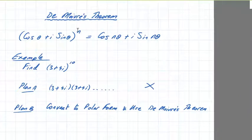As you can see in De Moivre's Theorem, the power goes in front of the angle. If we can get this in polar form, then we can make the power disappear and reappear in front of the angle. That gets rid of this problem of multiplying it out 10 times.